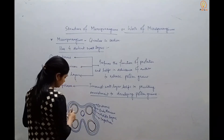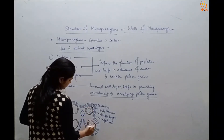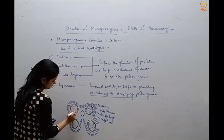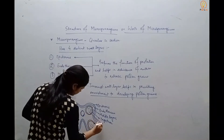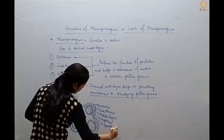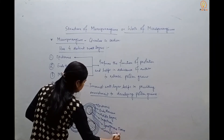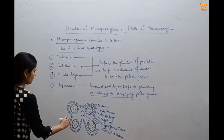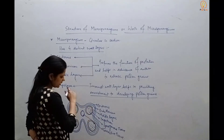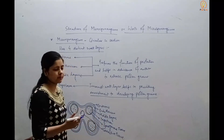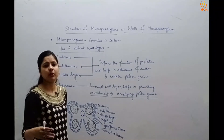Inside the tapetum is found the sporogenous tissue. This sporogenous tissue actually acts as a precursor for producing the future pollen grains. It is present as a distinct tissue inside the tapetum, and when microsporogenesis is explained, these things will get clear.